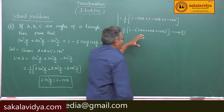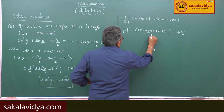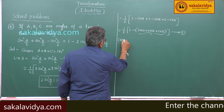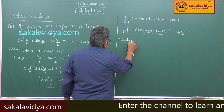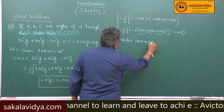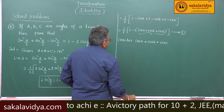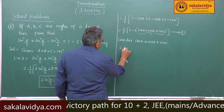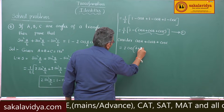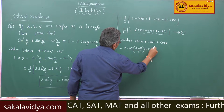It is better to evaluate cosA plus cosB plus cosC separately. Consider cosA plus cosB plus cosC. cosA plus cosB equals 2cos((A+B)/2) cos((A-B)/2).